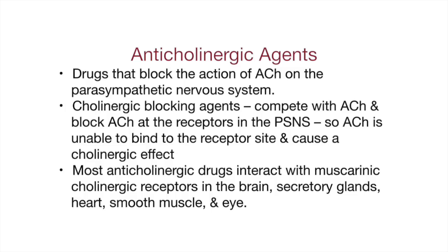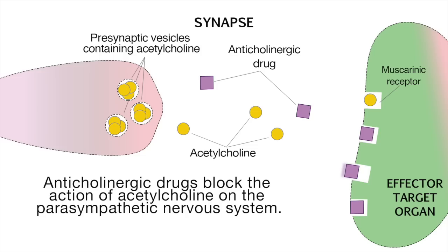Anticholinergic agents are drugs that block the action of acetylcholine on the parasympathetic nervous system. These cholinergic blocking agents compete with acetylcholine and block it at the receptors in the PSNS, so acetylcholine is unable to bind to the receptor site and cause a cholinergic effect. Most anticholinergic drugs interact with muscarinic cholinergic receptors in the brain, secretory glands, heart, smooth muscle, and eye.